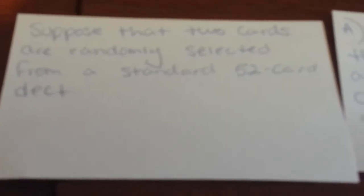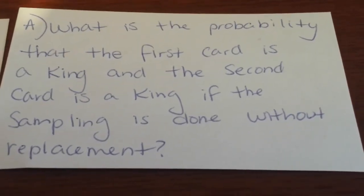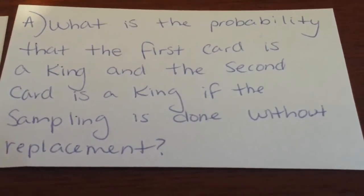Chapter 5.4 Problem 23. Suppose that two cards are randomly selected from a standard 52 card deck. What is the probability that the first card is a king and that the second card is a king if